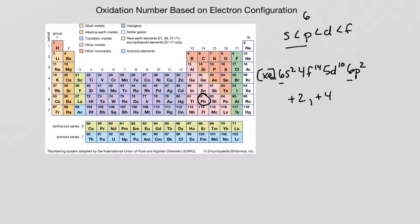So the oxidation numbers we could have: lead could lose just two electrons giving a plus two oxidation number, or it could lose a total of four. Remember, to form a plus four takes a lot more energy because for every electron you remove, energy is required. Alright, let's try another one — how about bromine?